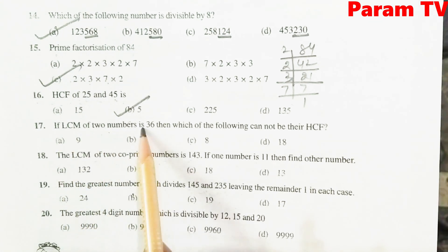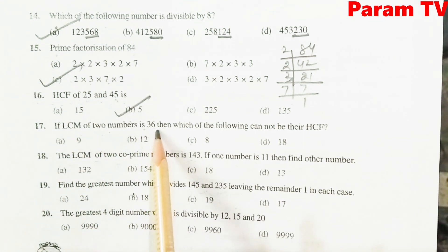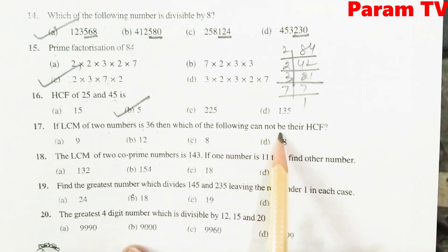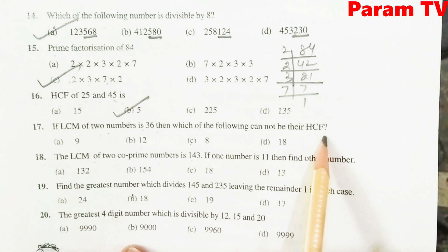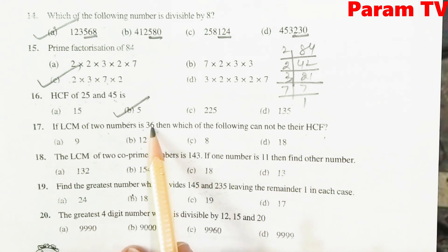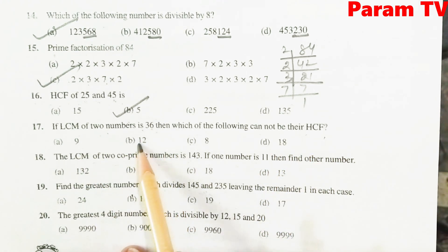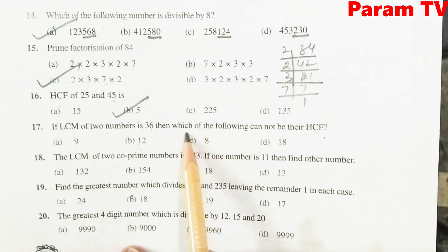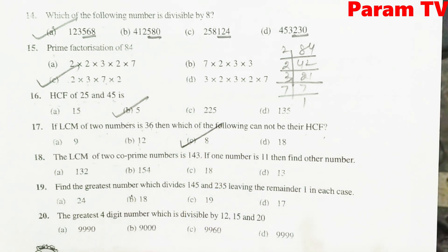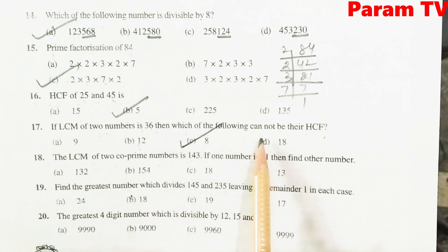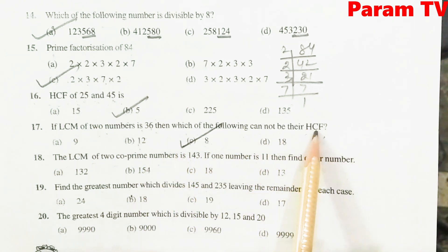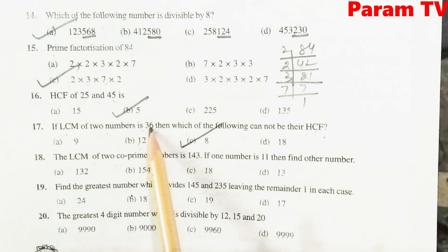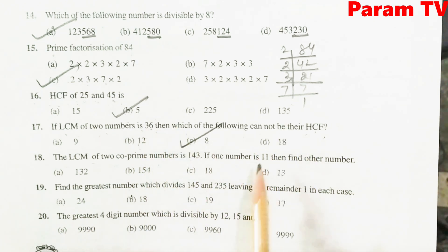If the LCM of 2 numbers is 36, then which of the following cannot be the HCF? HCF को LCM का factor होना चाहिए. 9 इसका factor है, 12 इसका factor है, लेकिन 8 के table में 36 नहीं आता — so 8 cannot be the HCF. Option 8 is correct.